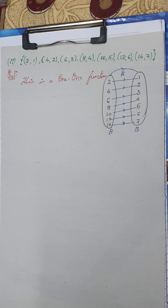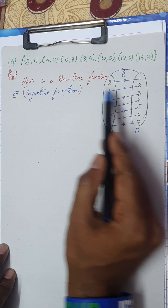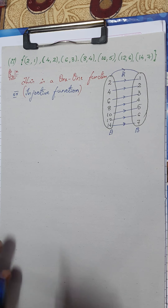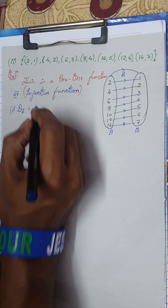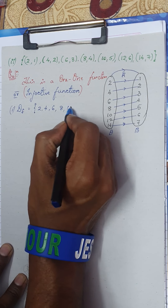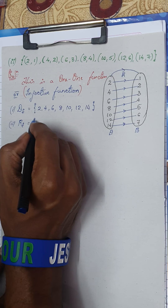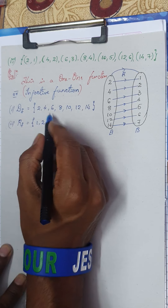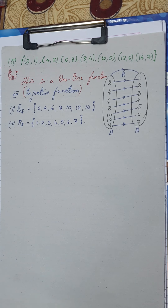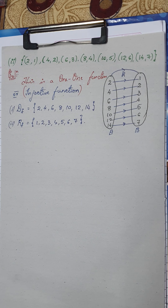This is also called an injective function. If each element has a unique image, then it is called one-one - one element, one image. Now let us write its domain and range. The domain of the function is the set of all first elements: {2, 4, 6, 8, 10, 12, 14}. The range of f is the set of all second elements: {1, 2, 3, 4, 5, 6, 7}. This completes the solution - check if it is a function, then write domain and range.